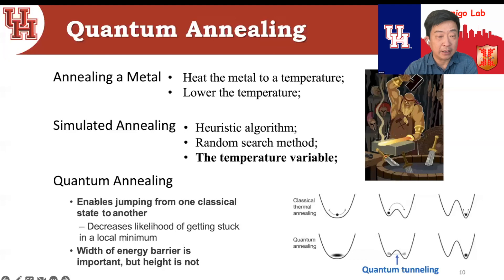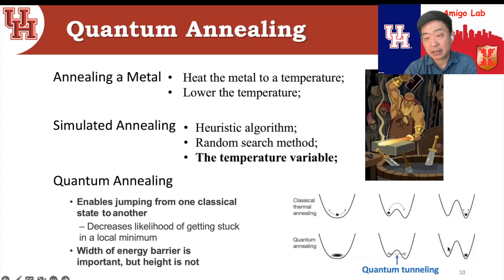For quantum annealing, you encode the non-convex optimization so that certain points appear with different probabilities. Due to quantum annealing, the local optimum appears with a certain probability, and the barrier height becomes less of an obstacle. The key is that the tunneling width, not height, is the key factor.